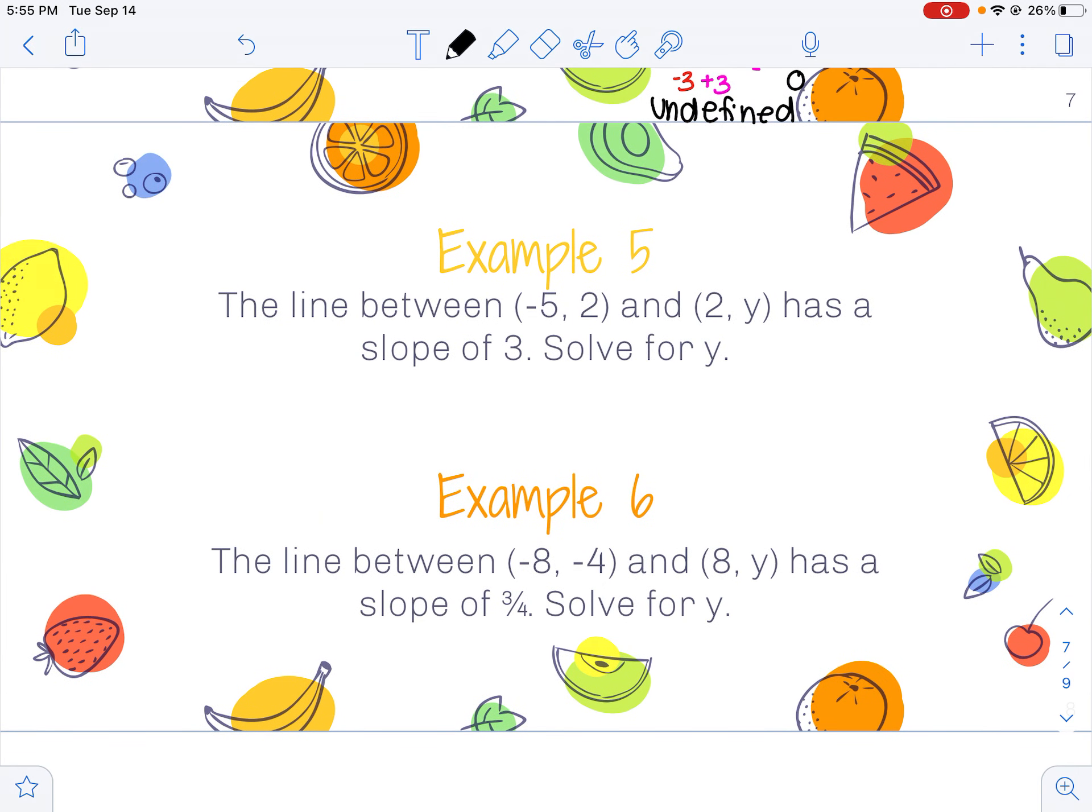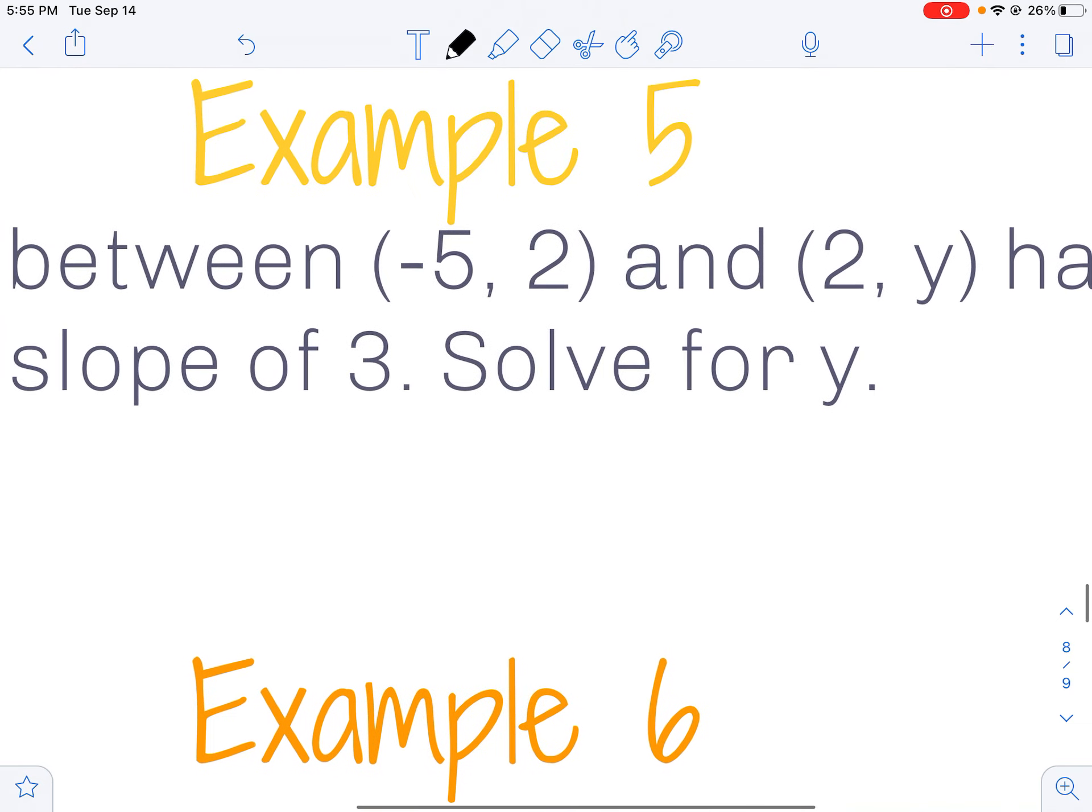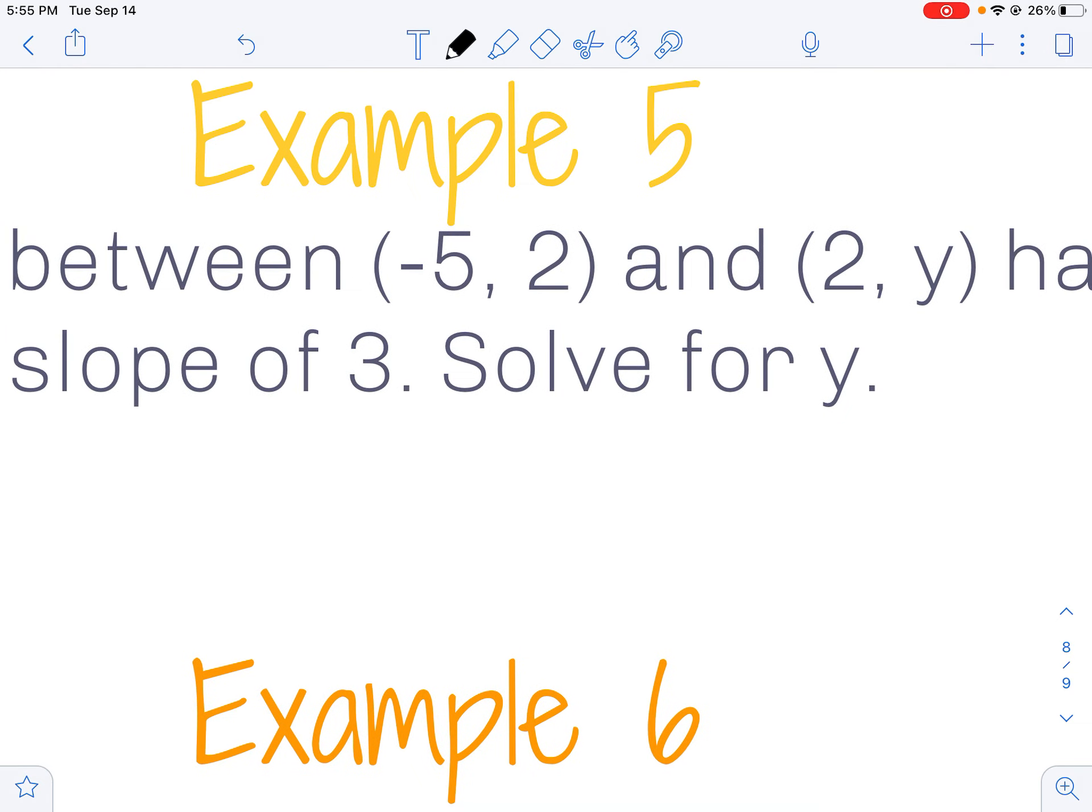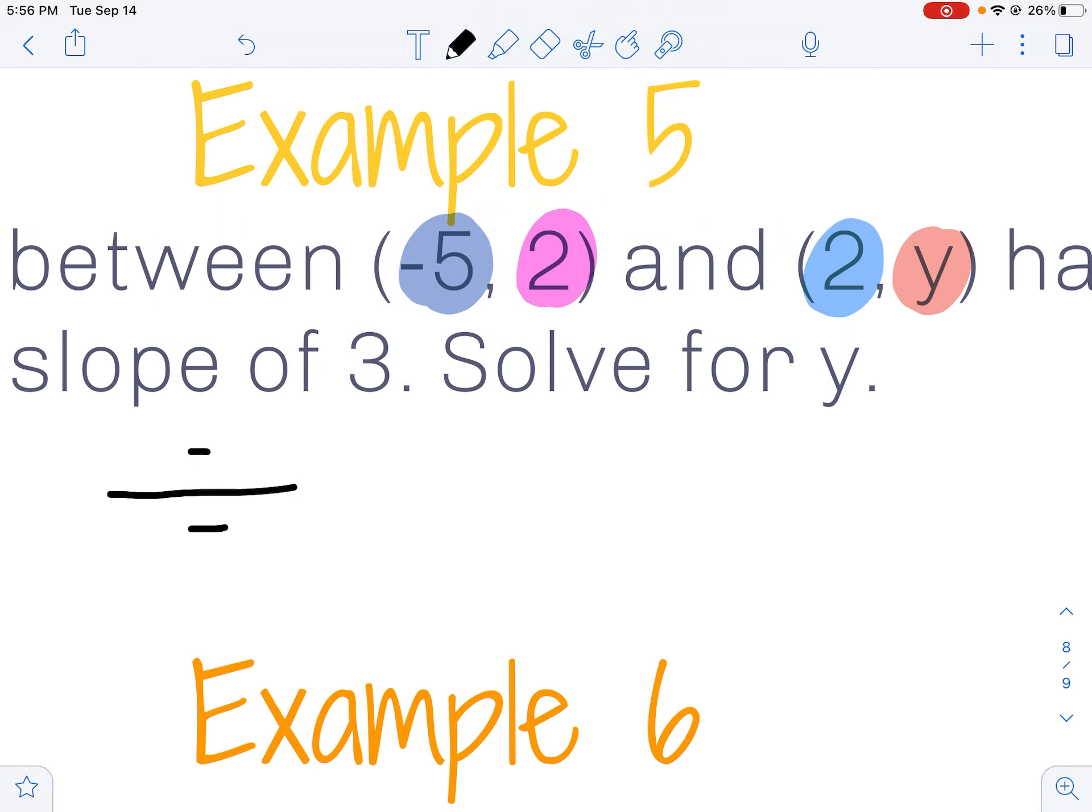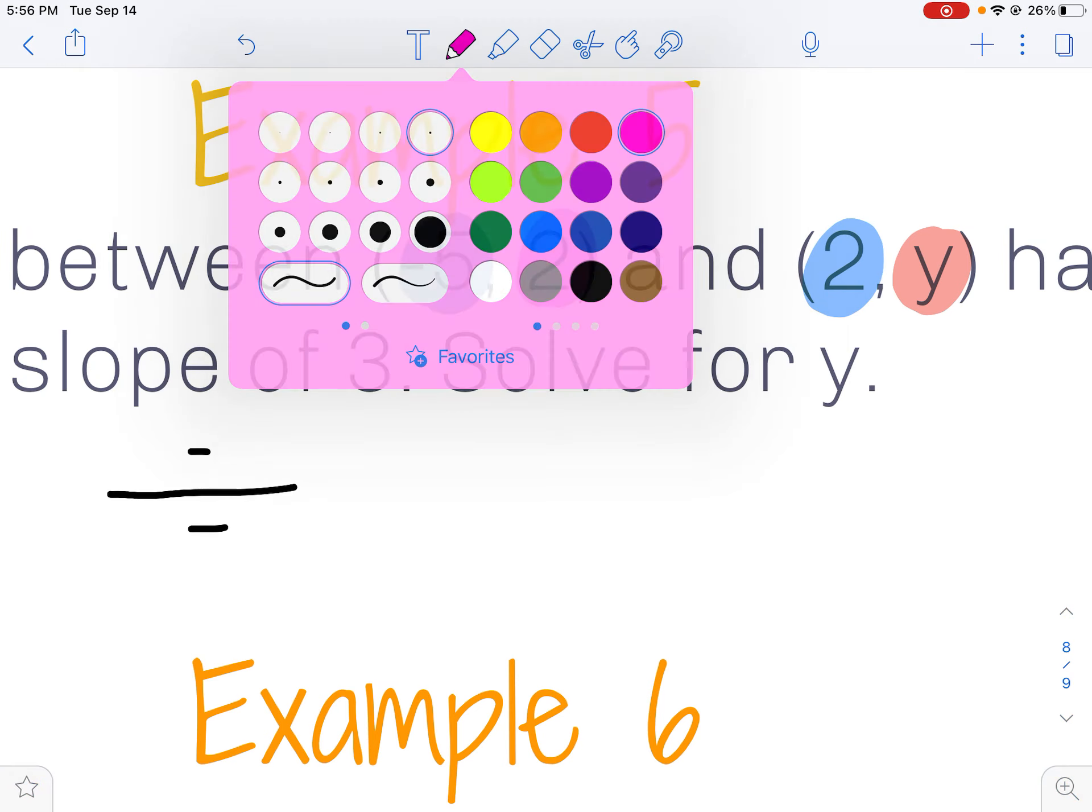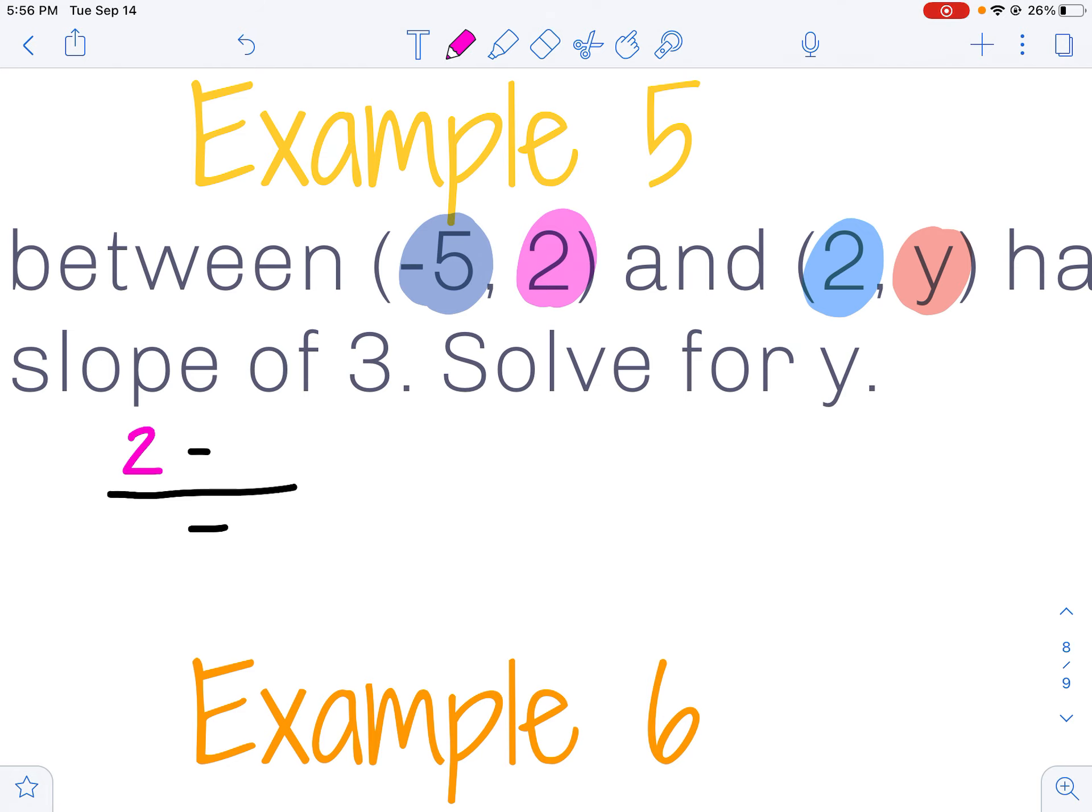On these last two examples, I'm given the slope and I'm trying to solve for a missing point, so I'm still going to plug everything into my formula. I'm going to take my first y value, 2, minus my unknown y value, y.